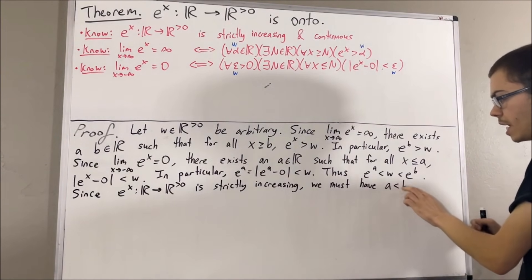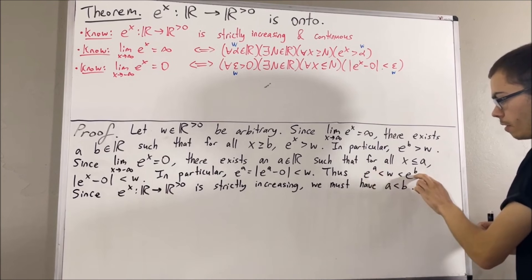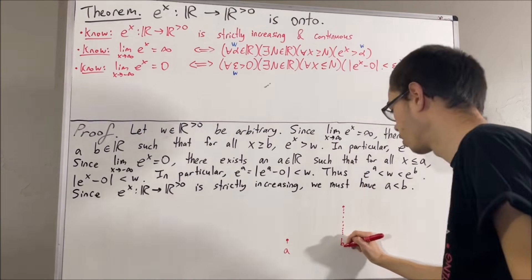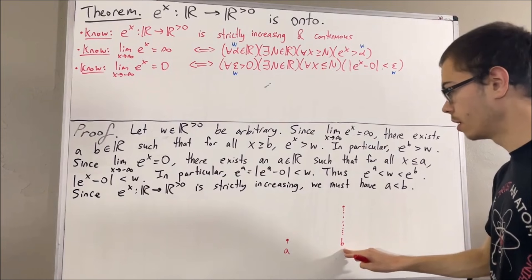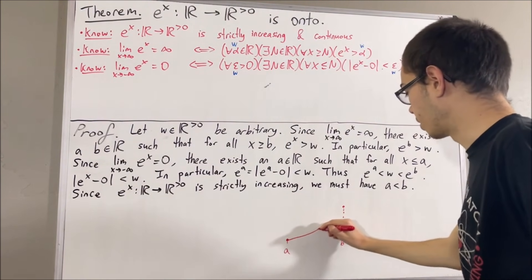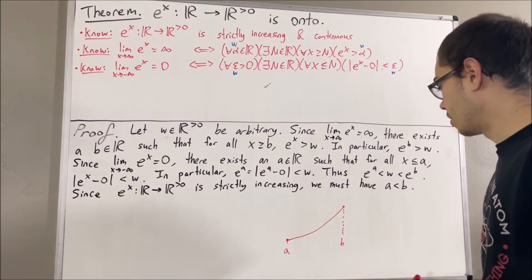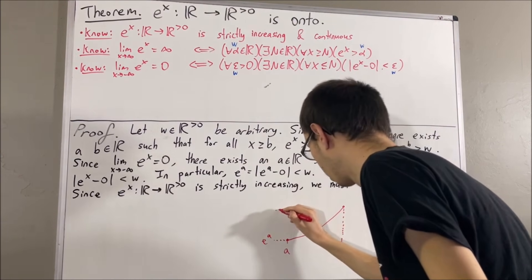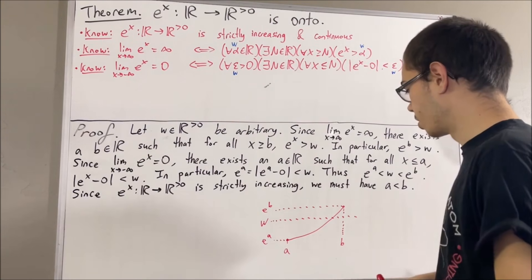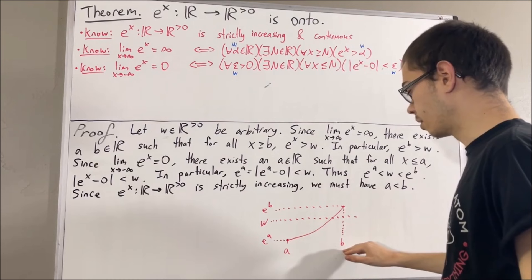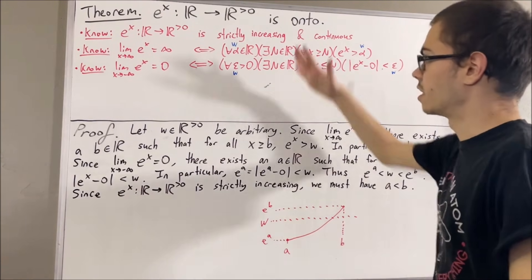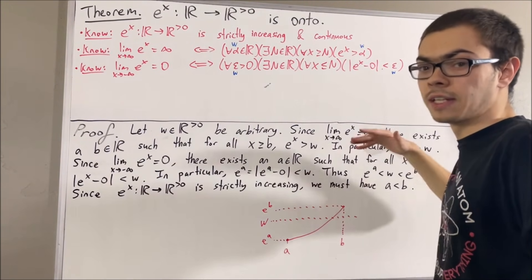Notice a < b, and w is a value between e^a and e^b. Let's visualize the graph of e^x for a second. Here we have a and b, because a < b. Since the exponential function is continuous, when we draw the graph from a to b it looks like a rising curve, with e^a at the left and e^b at the right. And w is some value between e^a and e^b. Since the exponential function is continuous, the fact we're really applying here is the intermediate value theorem.